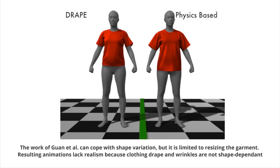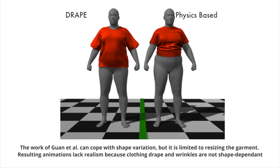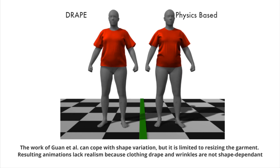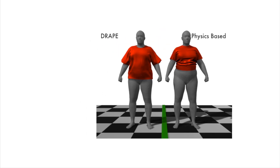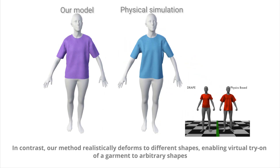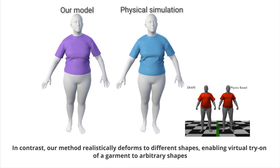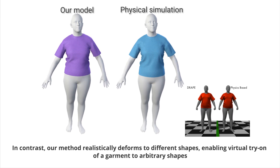The work of Gwang et al. can cope with shape variation, but is limited to resizing the garment. Resulting animations lack realism because clothing drape and wrinkles are not shape dependent. In contrast, our method realistically deforms two different body shapes, enabling virtual try-on of a garment for arbitrary shapes.